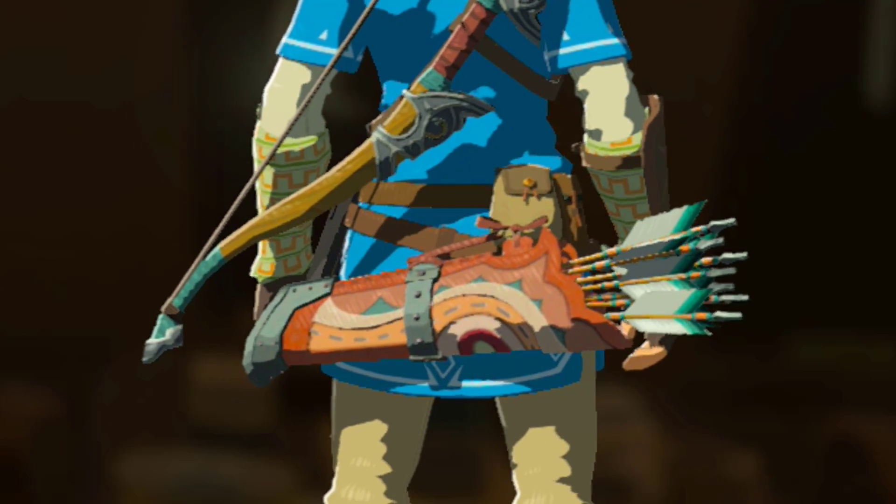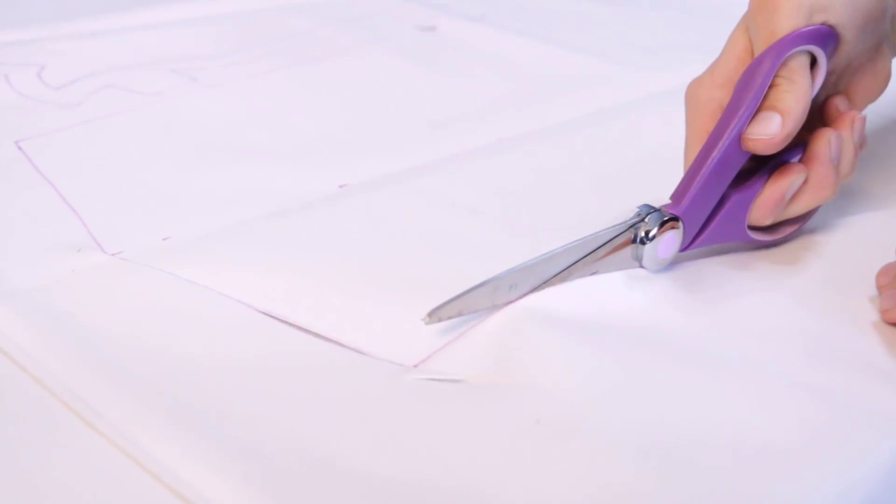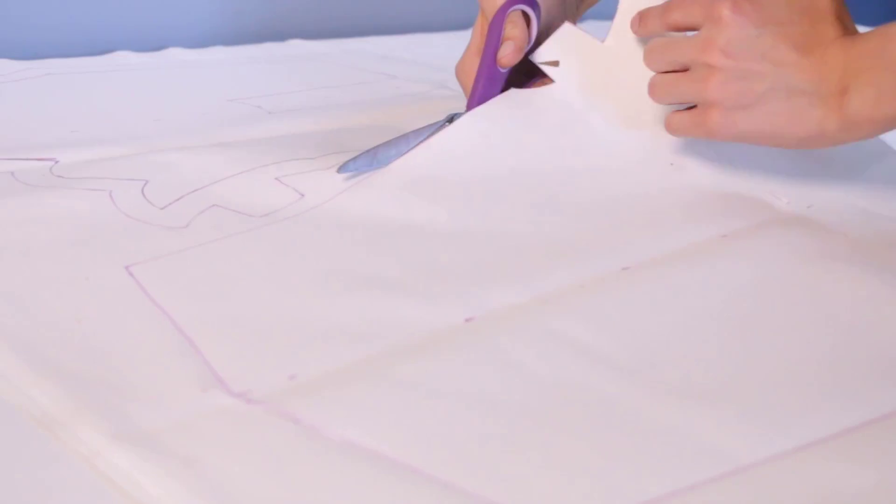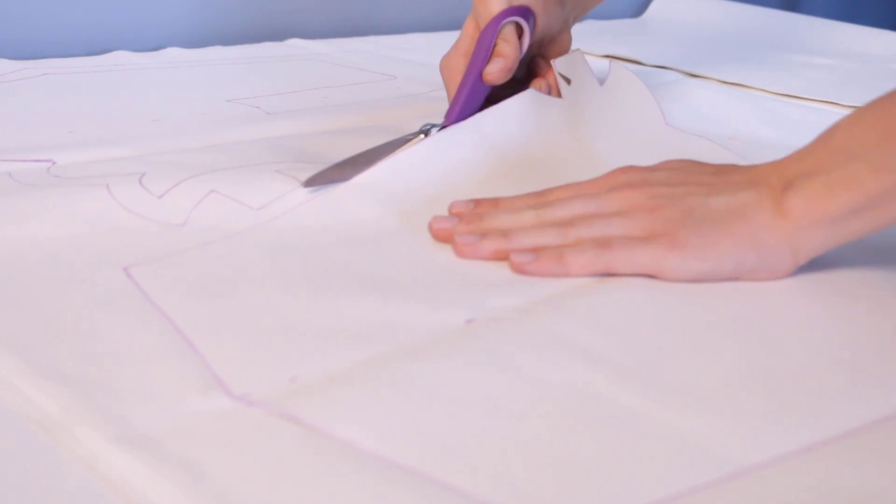To make Link's quiver, I started by rolling out my white faux leather and cutting out all of the pattern pieces. Once all of the leather was cut out, it was time to start painting.